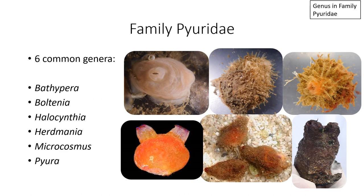I'd like to show you representatives of each of these genera so you have a visual of the whole animal. Top left is Bathypera. Top middle is Boltenia — Boltenia can also sometimes be stalked; this is Boltenia echinata, which is not stalked. Top right is Halocynthia. Bottom left is Herdmania. Bottom middle is Microcosmus. Bottom right is Pyura.